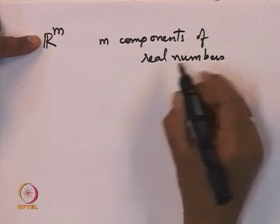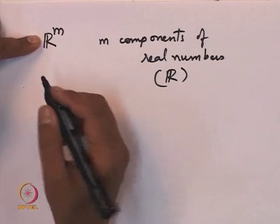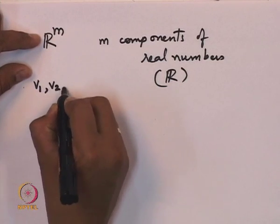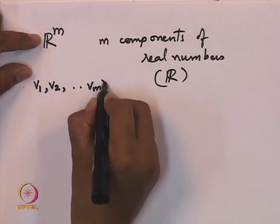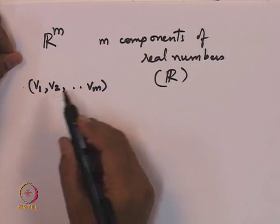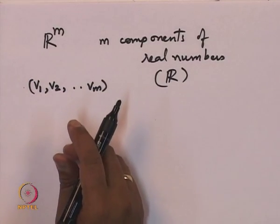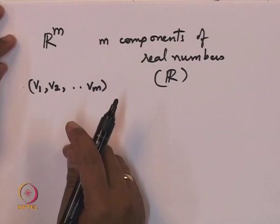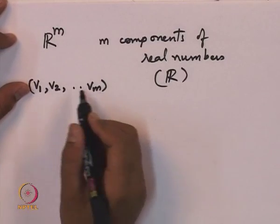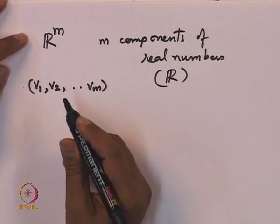Real numbers are denoted R, and hence m components are called R^m. One can think of a vector as v1, v2, up to vm. One could write it as a row vector or a column vector. In any case it has m components, each chosen independently as any real number, and together they constitute R^m.